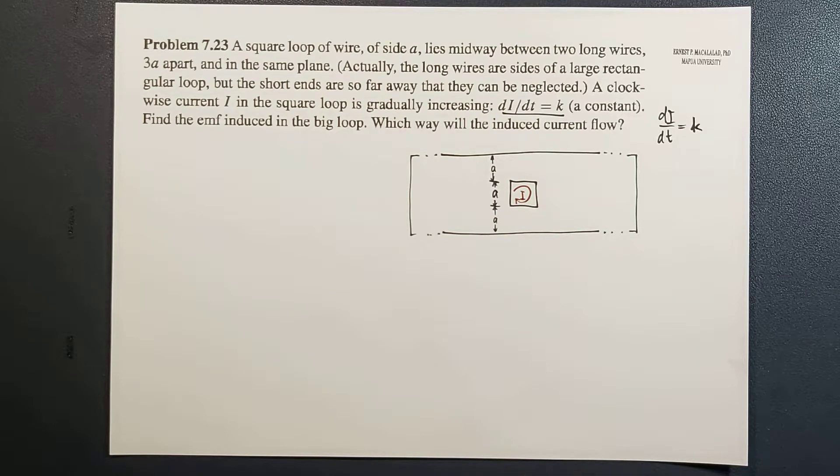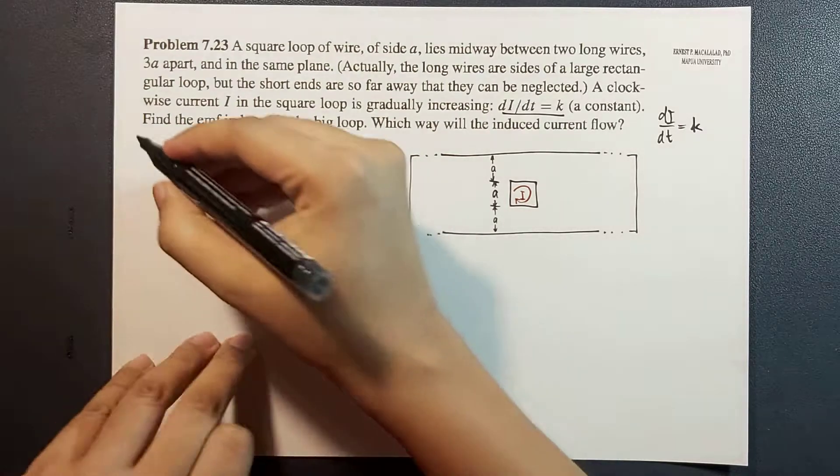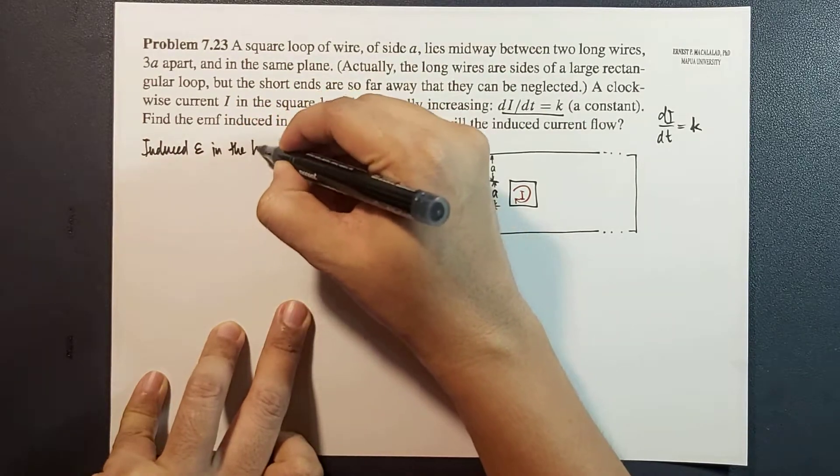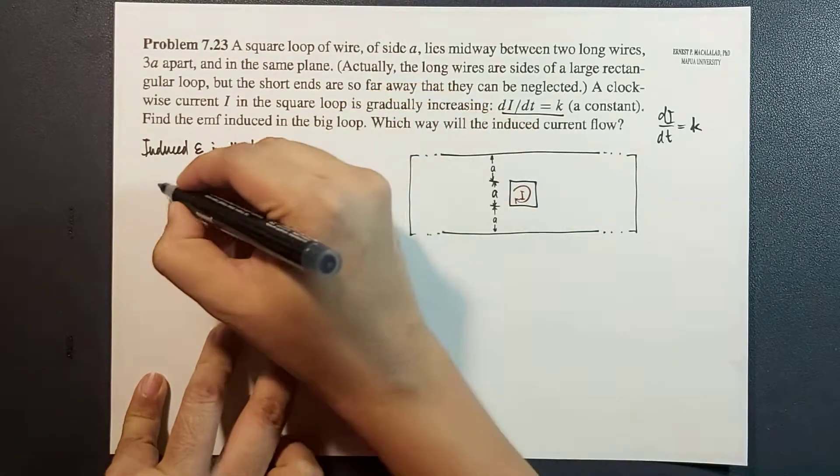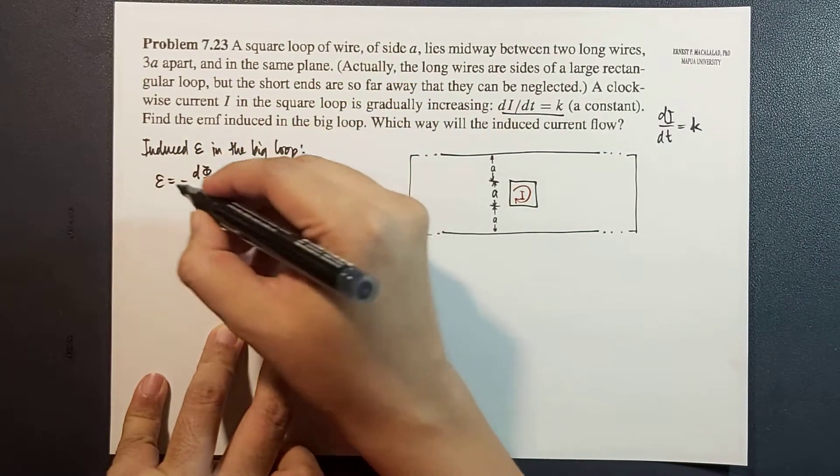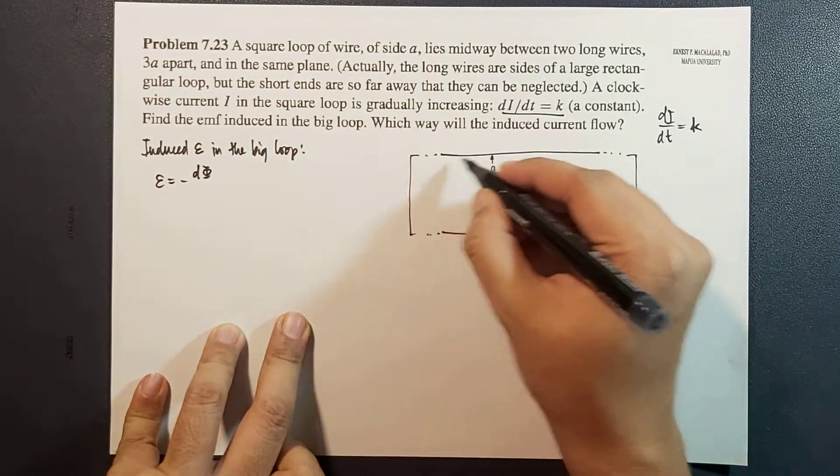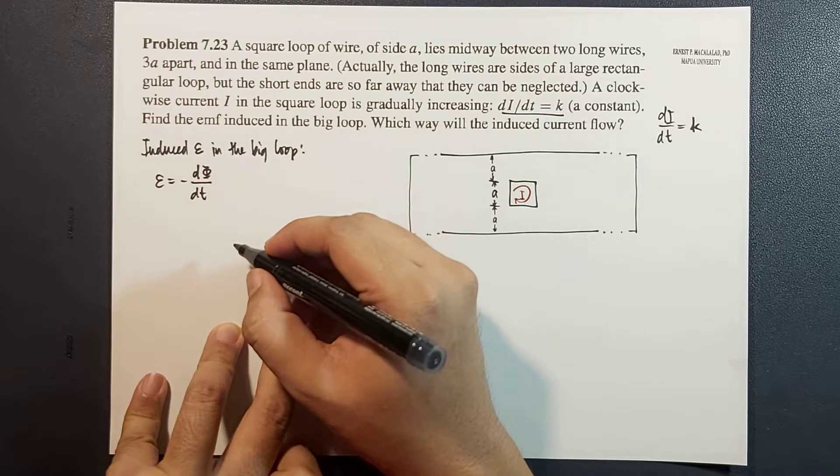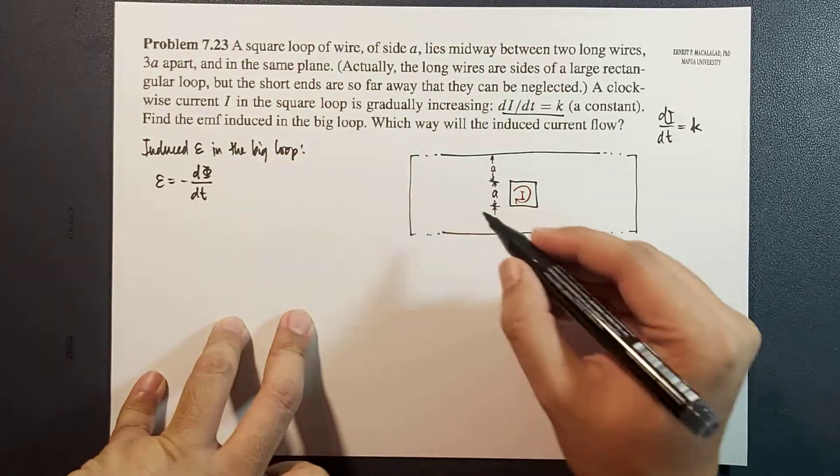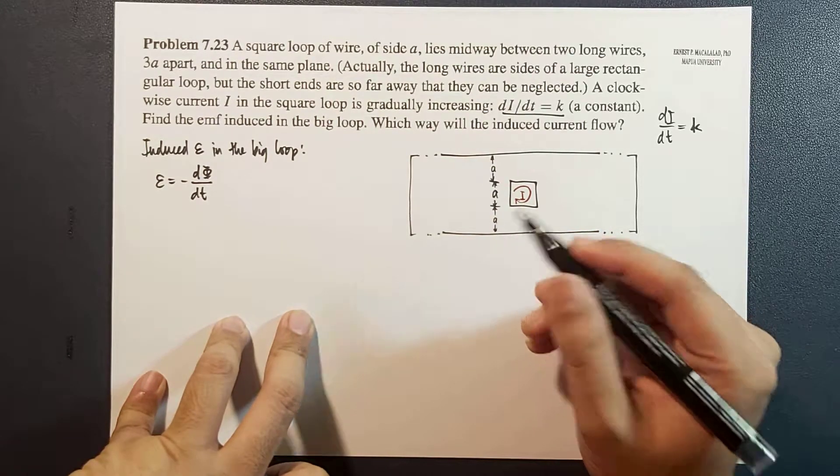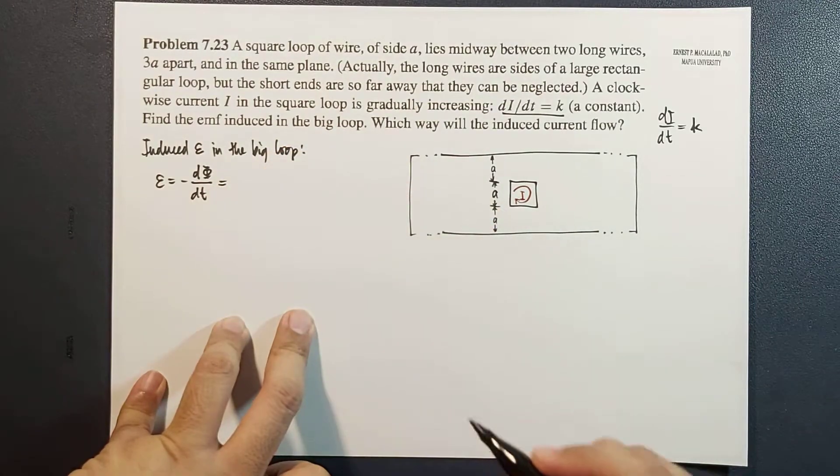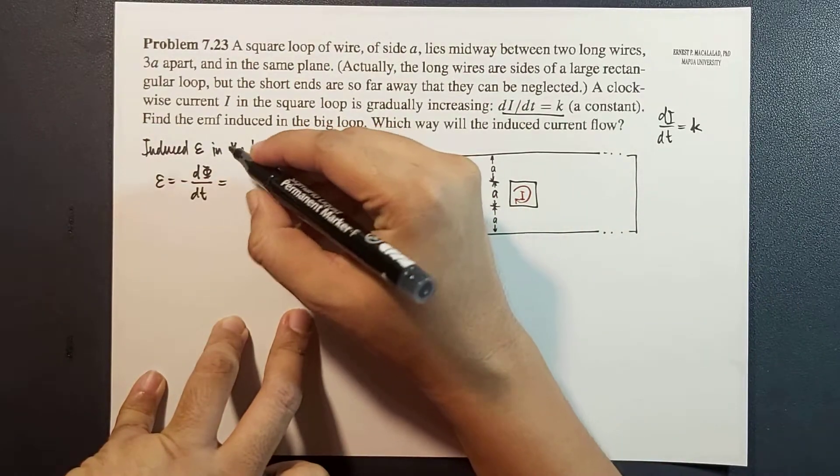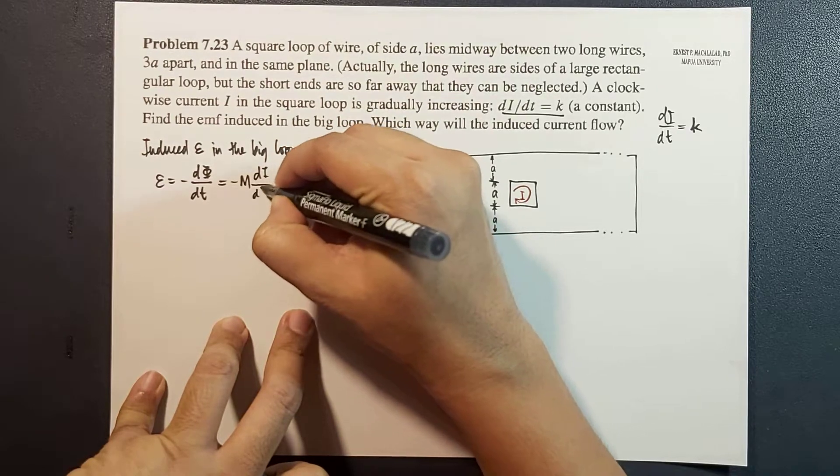We know that the induced EMF in the big loop is given by the negative derivative of the flux on the wire, on the large loop with respect to time. And we know that the flux is given by the mutual inductance M times the current in the small loop.